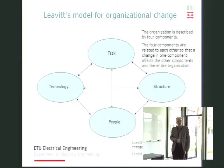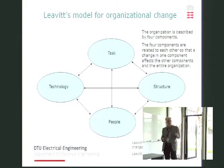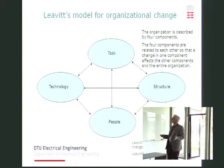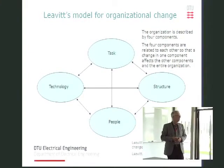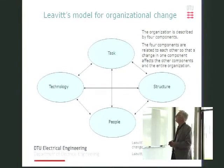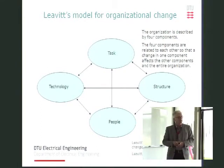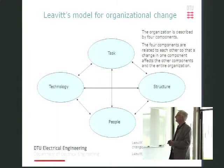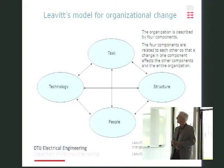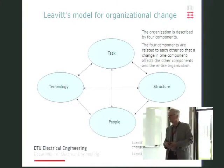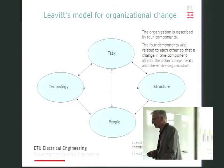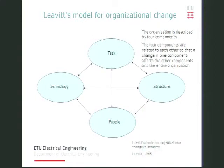The idea of that model is that you've got a number of different influences or components which together describe the most important influences on change in an organization. These components are: technology, task, structure, and people — the technology the organization works with, the tasks it should fulfill, the structure of the organization, and the people in it.